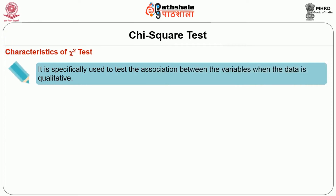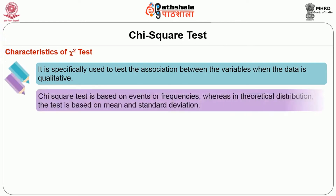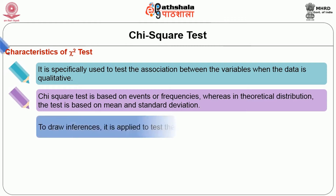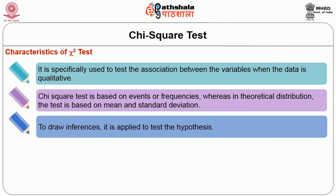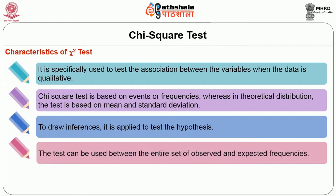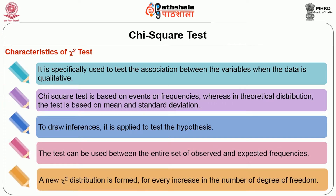The chi-square test is specifically used to test the association between variables when the data is qualitative. Second, the chi-square test is based on events or frequencies, whereas in theoretical distribution the test is based on mean and standard deviation. Third, through raw inferences it is applied to test the hypothesis. Fourth, the test can be used between the entire set of observed and expected frequencies. Fifth, a new chi-square distribution is formed for every increase in the number of degrees of freedom.